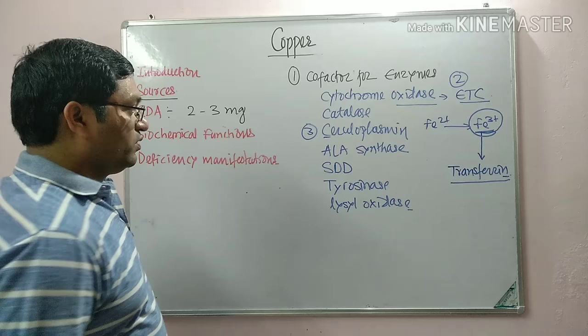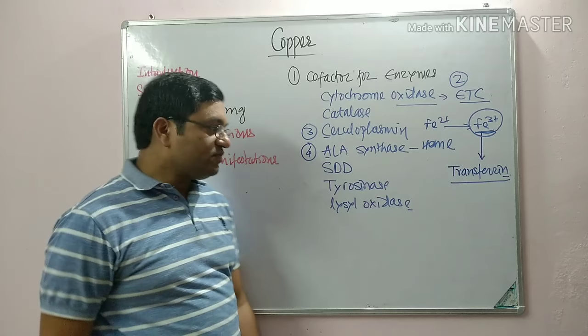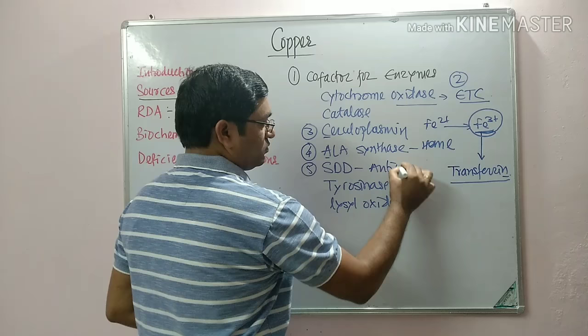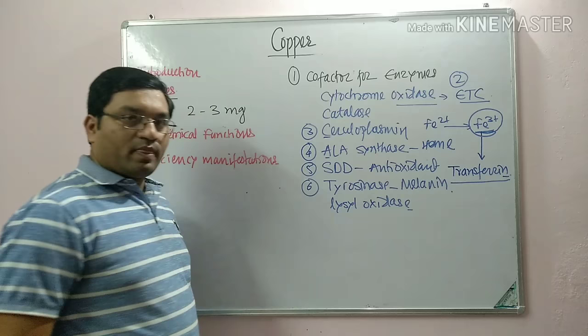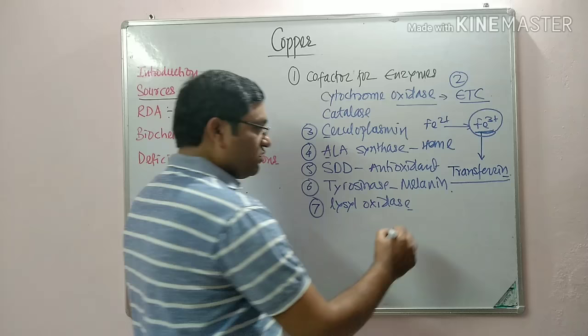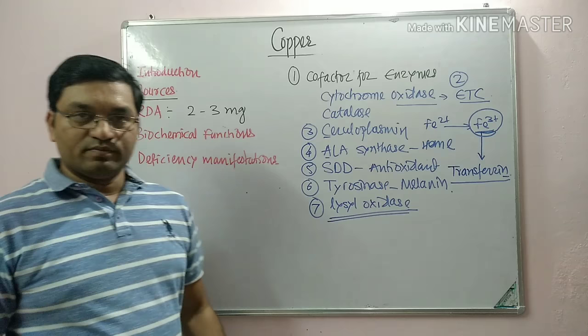Fourth, copper is important in heme synthesis — ALA synthase is an important enzyme in heme synthesis. Copper also functions as an antioxidant, is important in melanin synthesis, and is important in the formation of vessel walls, as lysyl oxidase requires copper for that function. These are the important functions of copper in our body.